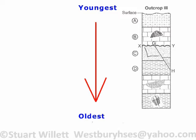Likewise, B is sitting on top of X-Y. So now: A is younger than B, B is younger than X-Y, X-Y is younger than C, and C is younger than D.